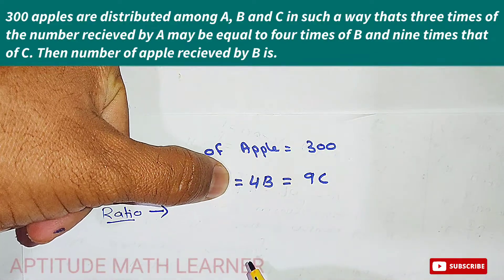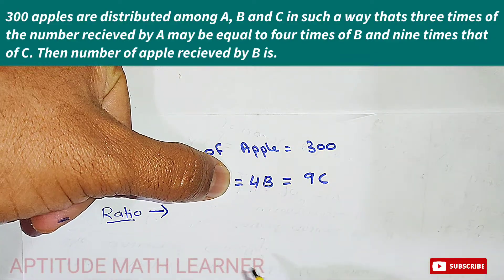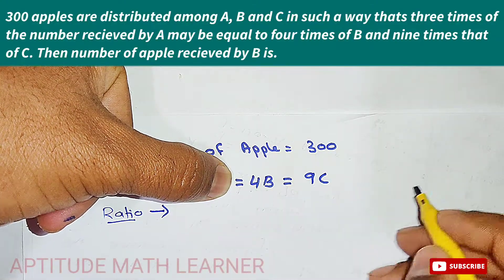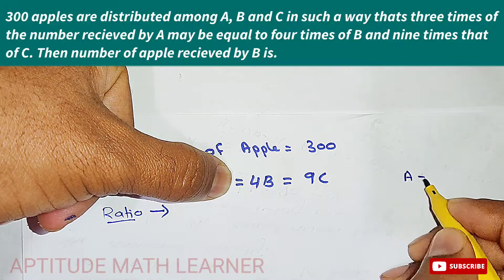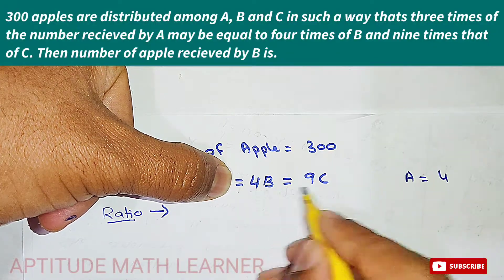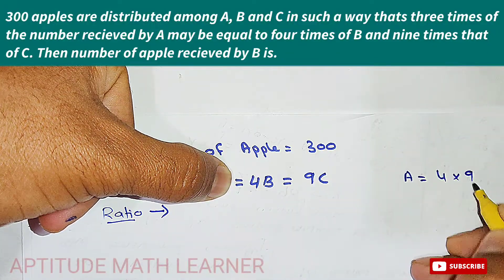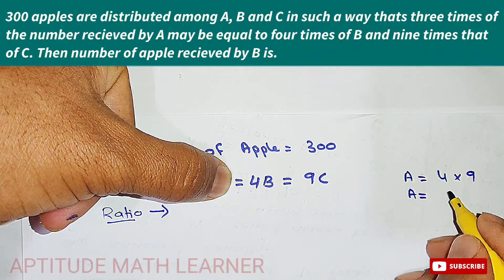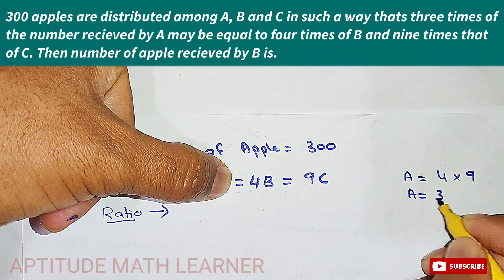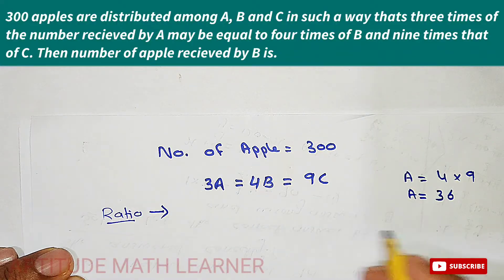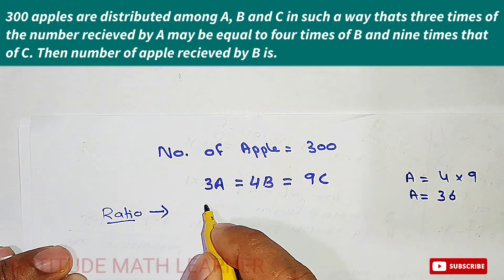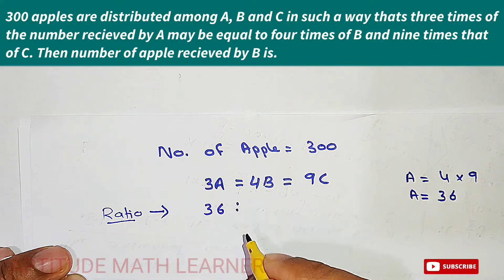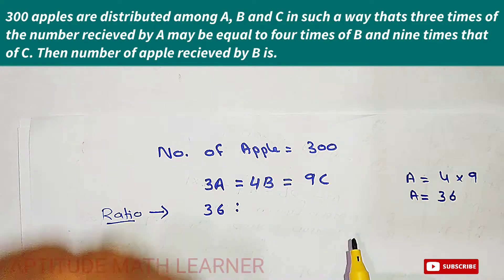To find out the ratio, you hide the first portion. For A, the values 4 and 9 are available, so A is equal to 4 multiplied by 9, which gives us 36. So the ratio for A is 36.